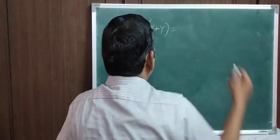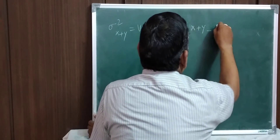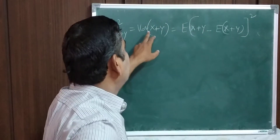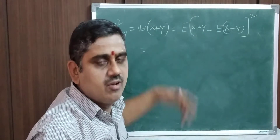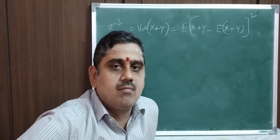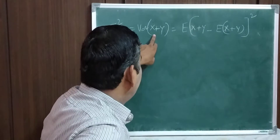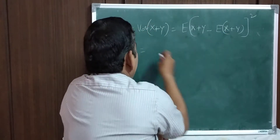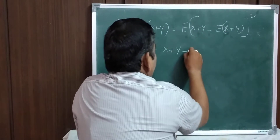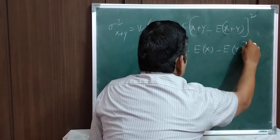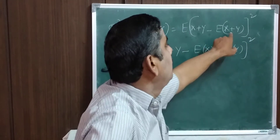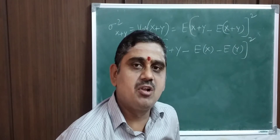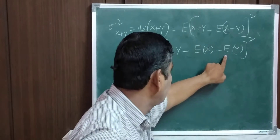By definition, variance of x plus y is the expectation of (x plus y minus expectation of x plus y) whole squared. Using the addition theorem of expectations, expectation of x plus y equals expectation of x plus expectation of y. So we can rewrite this as expectation of (x minus expectation of x) plus (y minus expectation of y), all squared.